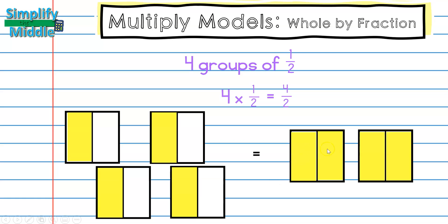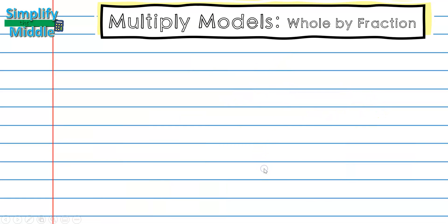And this simplifies. If I look at this, all of both of these are shaded, so that just simplifies to 2. If I divide 4 by 2 I get 2, and 2 divided by 2 is 1, and 2 over 1 is 2. So that makes sense. This problem, 4 groups of 1/2, is simply 2.